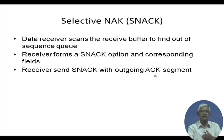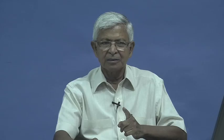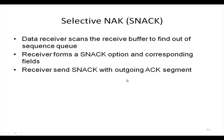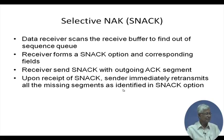The receiver sends ACK for segments it has received and also includes gap information for segments it has not received. In standard TCP, ACK is only sent up to the last in-order received segment, and duplicate ACKs are sent for gaps. With SNACK, the receiver sends ACK for correctly received out-of-order segments and explicitly identifies gaps, rather than sending duplicate ACKs.